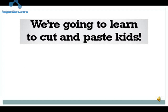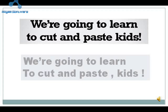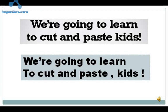Ek aur famous example aapke saamne hai ki comma ke use nahi karne ke wajah se kya-kya khatraa ho sakta hai. Sentence hai: 'We are going to learn to cut and paste kits.' Meaning kya ho gaya? — Chalo aaj hum seekhte hain bachon ko kaise kaate hain aur chipkaate hain. Ab sentence kuch is tarah se kehna tha: 'We are going to learn to cut and paste, kids' — bachon, chalo aaj hum cut aur paste kaise karte hain yeh seekhte hain. Is prakar ek comma nahi dene ke wajah se dono sentences mein bahut antar aa jaata hai. Isliye sentence mein, clauses mein, comma ka hona kitna zaroori hai, iska andaza aapko aa gaya hoga.